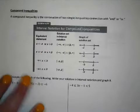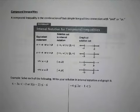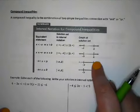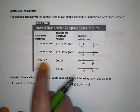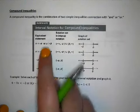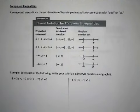Next we're going to look at compound inequalities — inequalities combining two inequalities using AND, meaning both solutions must be true at the same time, or OR, where it could be one solution or the other. With AND it can look like a sandwich with an algebraic expression in the middle between two numbers. With OR, the solutions are typically going in opposite directions.